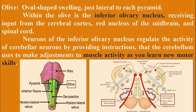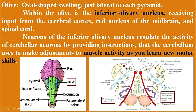Just lateral to each pyramid, there is the olive, containing the inferior olivary nucleus. It regulates the activity of cerebellar neurons by providing instructions, which is used by the cerebellum to make adjustments to muscle activity as we learn new motor skills.